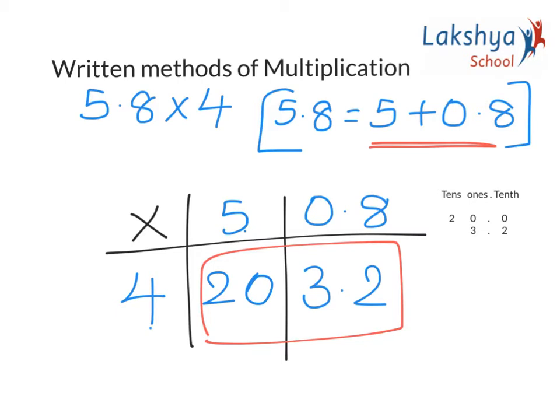Now let's start adding the tenths place, that is 0 plus 2, which gives me 2. A point. 0 plus 3 is 3, and 2. The answer is 23.2.